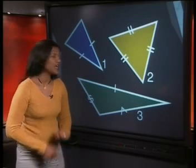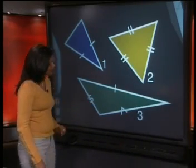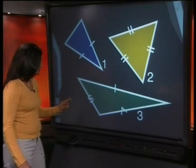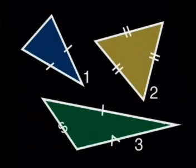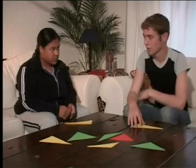Diagram 3 is a scalene triangle. We can see by the markings that the sides are of different lengths. For this activity, we're going to be using right-angled scalene triangles. We gave Hayley and Wesley a set of triangles like these to see what shapes they can come up with. Let's have a look.